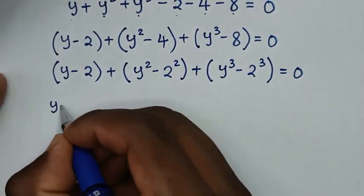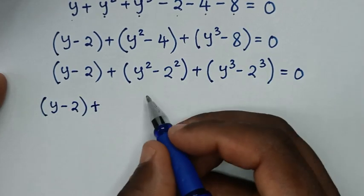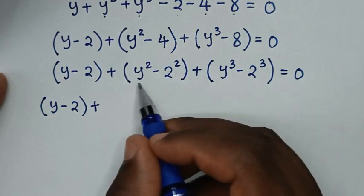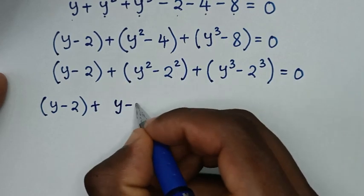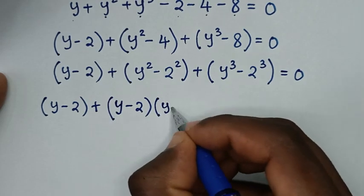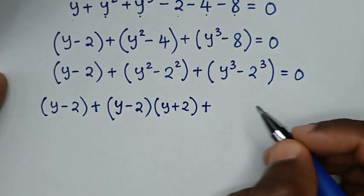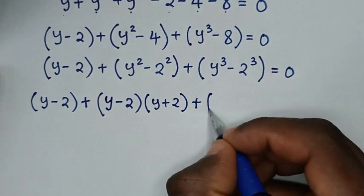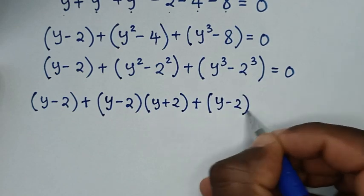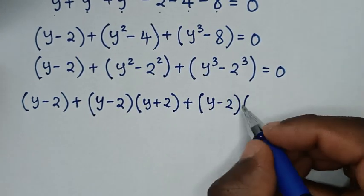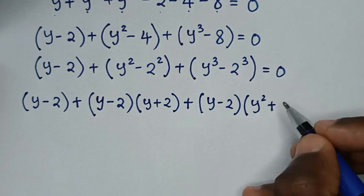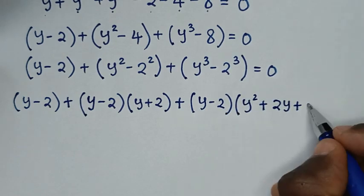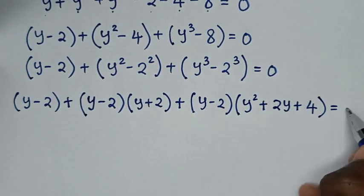Then bracket y minus 2 bracket, plus bracket y square minus 2 square bracket — this is in the form of difference of two squares, so it factors as y minus 2 times y plus 2. Plus bracket y power 3 minus 2 power 3 bracket — this factors as y minus 2, times bracket y square plus 2y plus 4 bracket. All equal to 0.